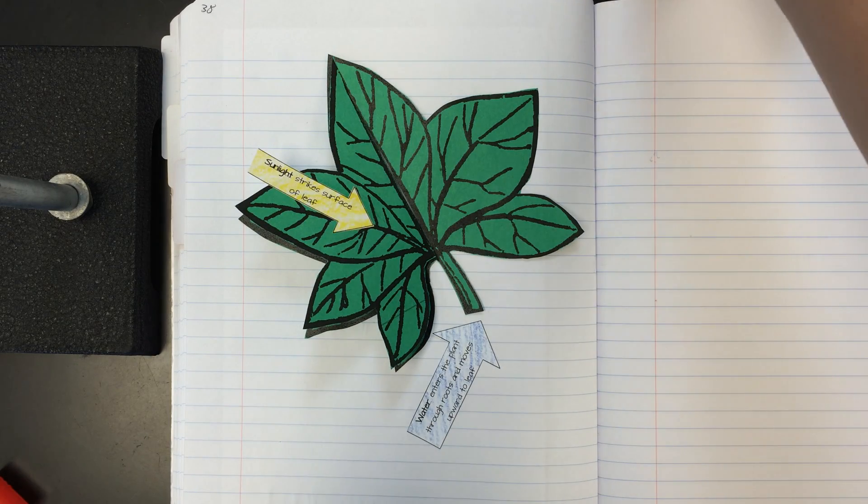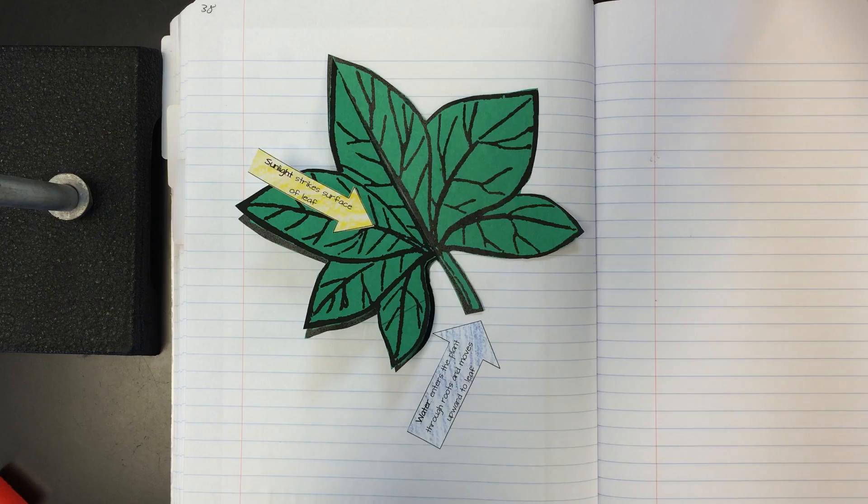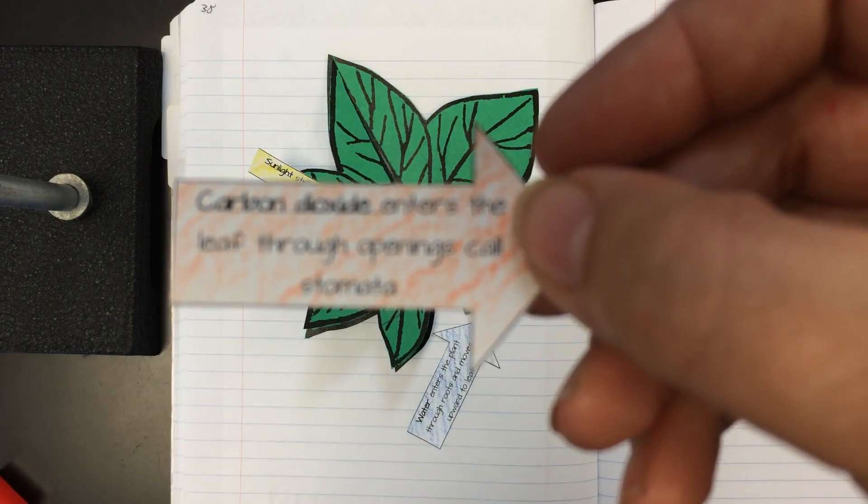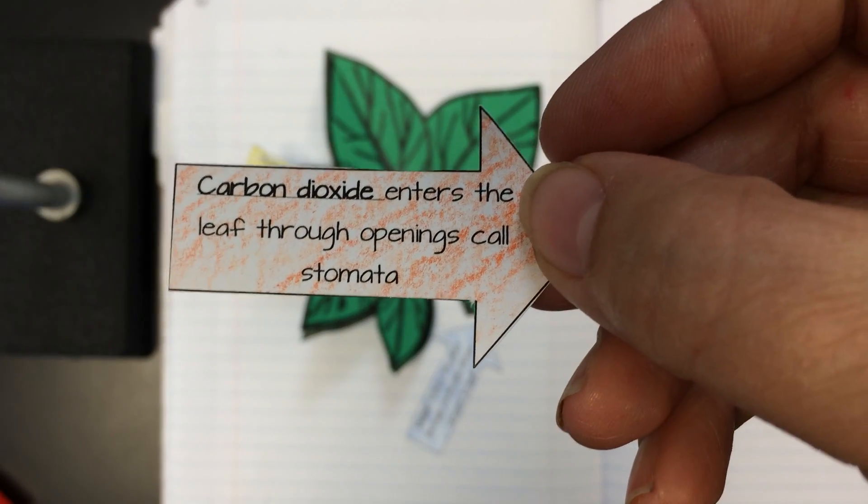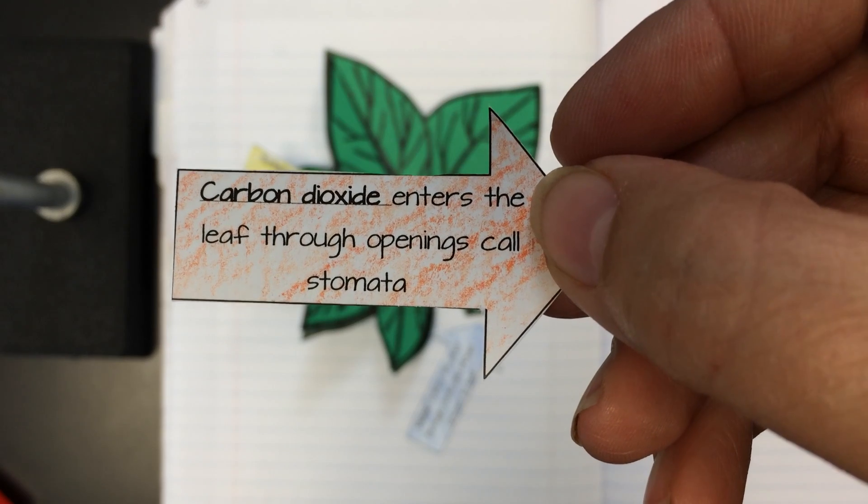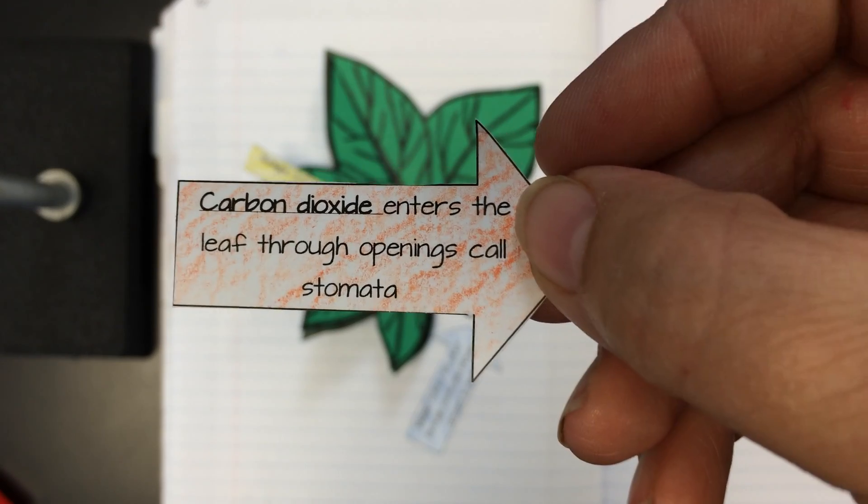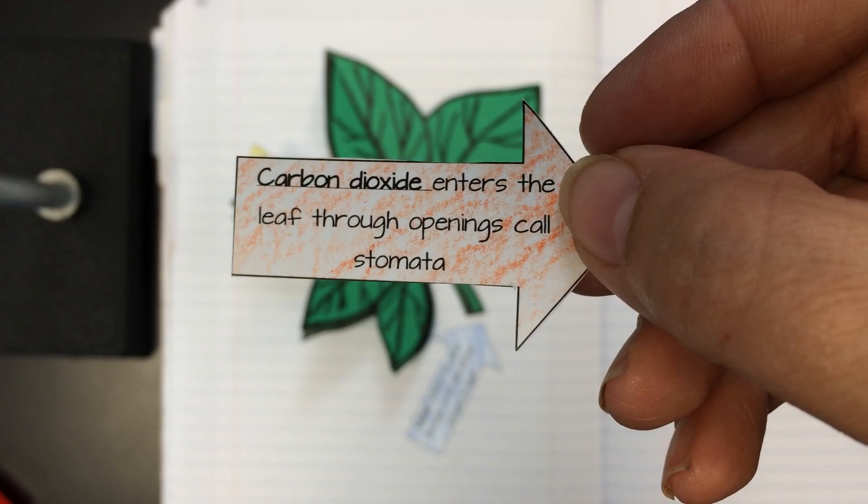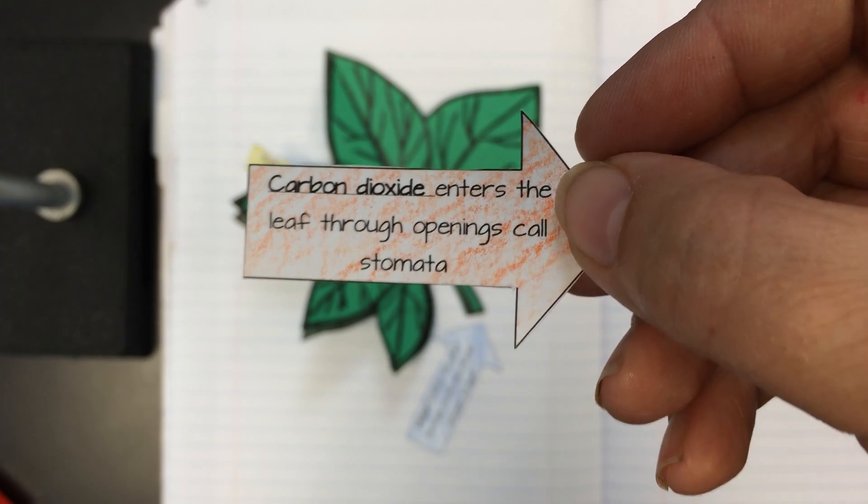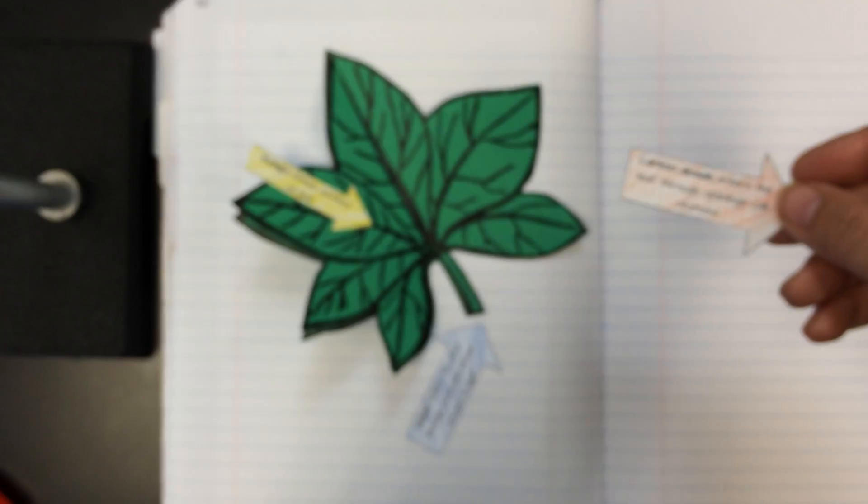We also have another key ingredient for photosynthesis, and that is carbon dioxide. Carbon dioxide enters the leaf through the openings called stomata. Stomata. Weren't those the little things that we just glued onto the back side of our leaf? Why, yes they are.